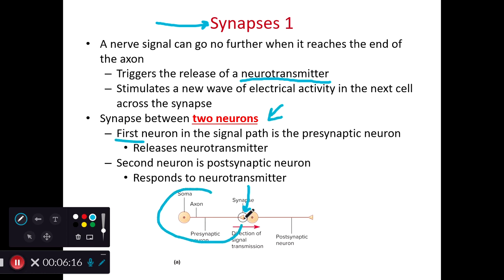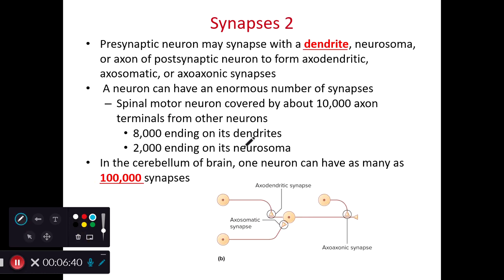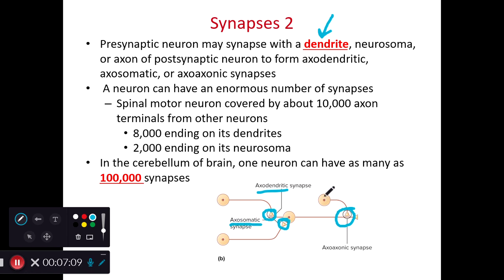Here we see a chemical synapse between two separate neurons. The first neuron, shown on the left, is the presynaptic neuron — it releases neurotransmitters from its axon terminal. The second neuron is the postsynaptic neuron, which receives the neurotransmitter typically at the dendrite, occasionally at the neurosoma. Presynaptic neurons most often synapse with a dendrite, but they can also synapse with the cell body or the axon of the postsynaptic neuron. An axon-to-dendrite synapse is an axodendritic synapse, axon-to-neurosoma is an axosomatic synapse, and axon-to-axon is an axoaxonic synapse.